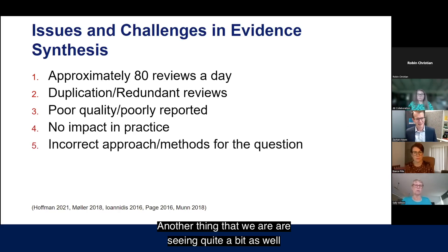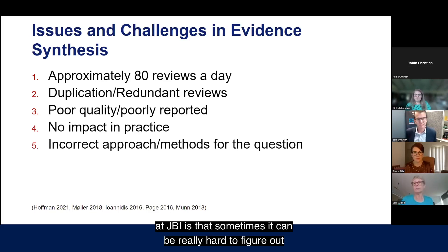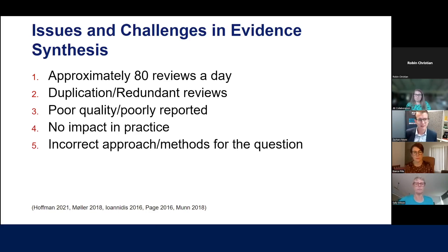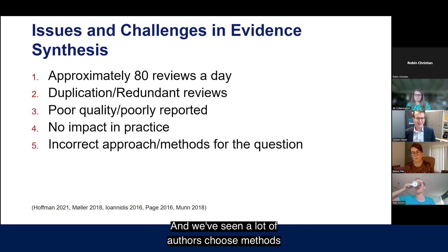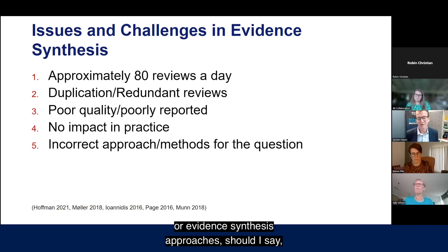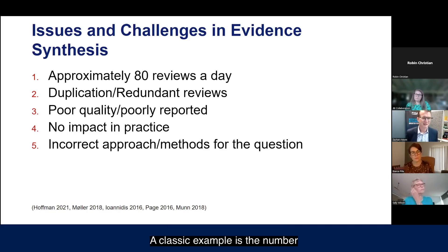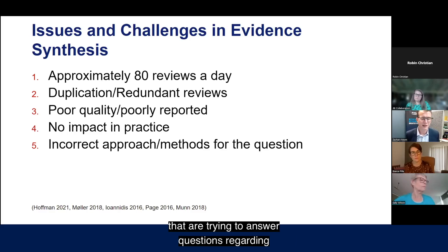Another thing we see quite a bit at JBI is that it can be really hard to determine what approach or methods are best for a given question. We've seen many authors choose systematic review or evidence synthesis approaches that are probably not the best fit — a classic example being the number of scoping reviews that are trying to answer questions about the effectiveness of interventions.